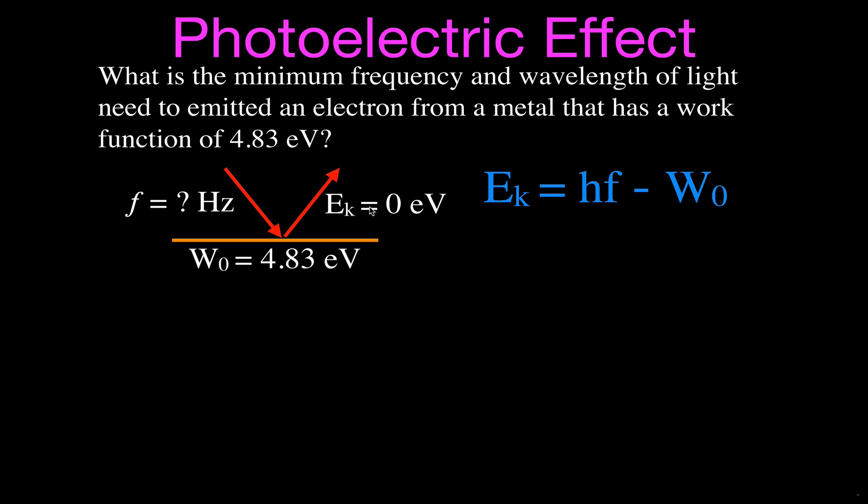Now, as we said, the kinetic energy is zero, so we're just going to set that to zero. That makes that term go away, and we want to solve for the frequency. So now we have the work function is equal to H times the frequency. We want to solve for the frequency. That means the frequency is the work function divided by Planck's constant.